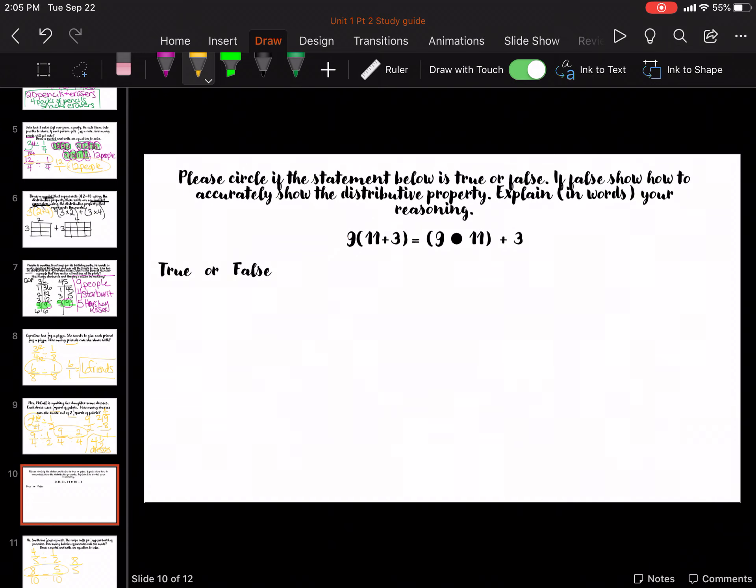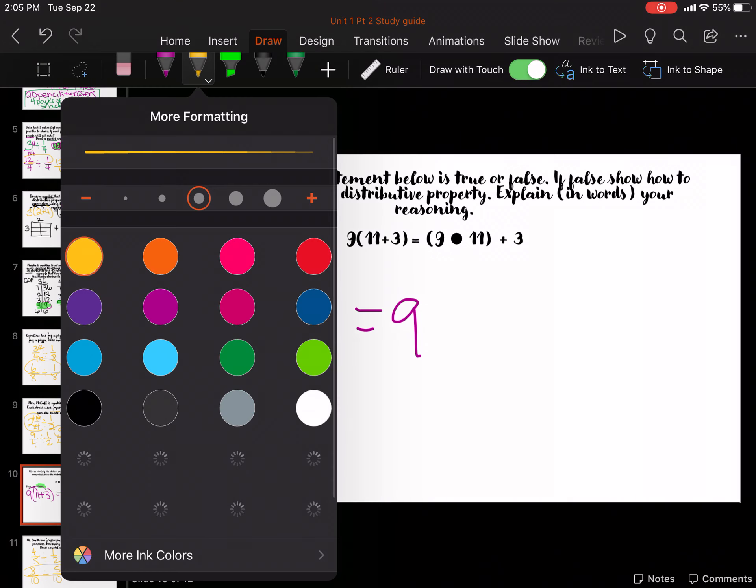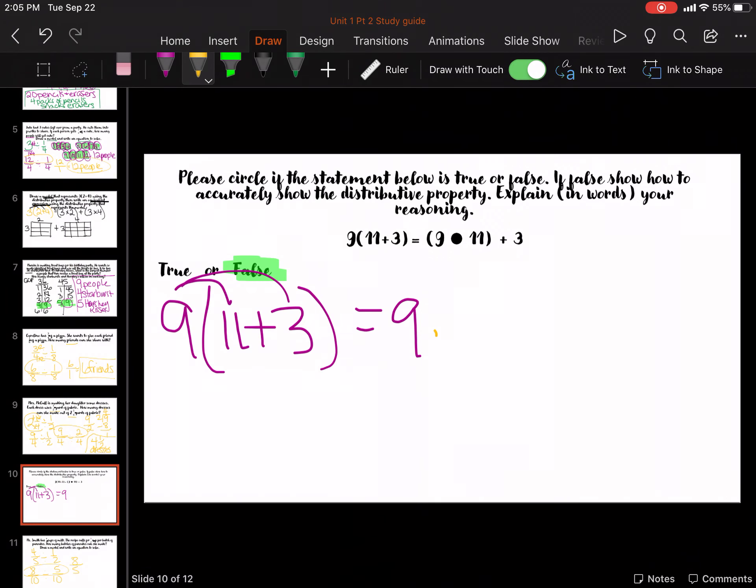So, yes, I want you to keep that 1 half because that's exactly how many dresses you could make. So, here we go. Circle if it is true or false and then explain it. This one is false. The reason is they forgot to multiply both parts. So, it should be 9 times 11. And yes, that dot means multiply, remember. 9 times 11, plus 9 times 3. They forgot to times it by 3. So, you need to write that in your explanation.